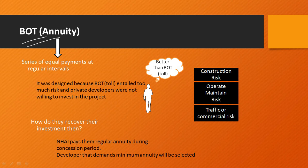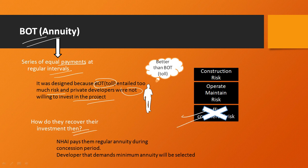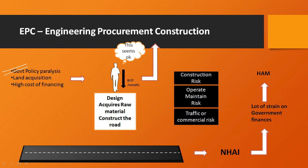The next one is BOT-Annuity. Annuity means a series of equal payments at regular intervals. This model was designed because BOT-TOL entailed too much risk and private developers were not willing to invest. It is exactly similar to BOT-TOL except that the private party does not bear the traffic or commercial risk. Instead, the National Highway Authority of India pays them regular annuity during the concession period, and the developer demanding the minimum annuity is selected. However, due to government policy paralysis, difficulty in land acquisition, and high cost of financing, private interest dried up even in BOT-Annuity.